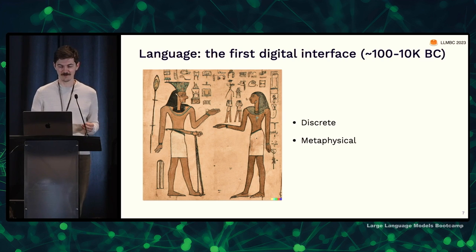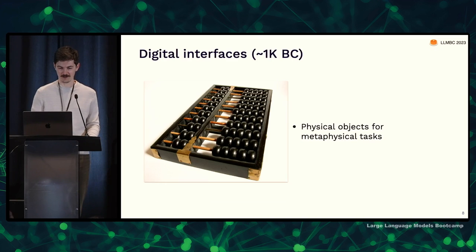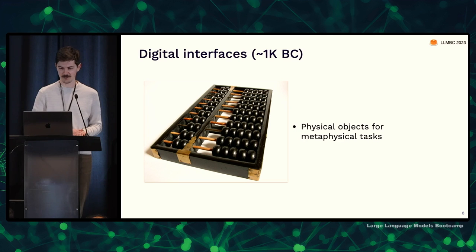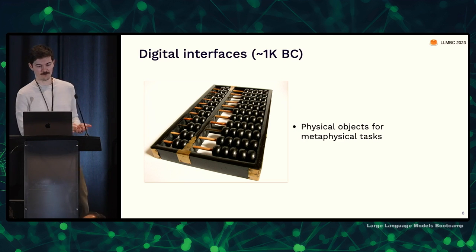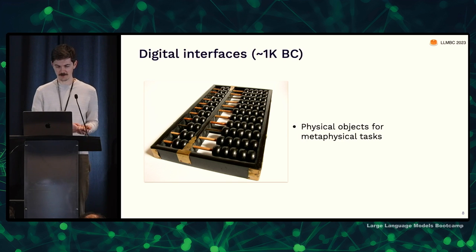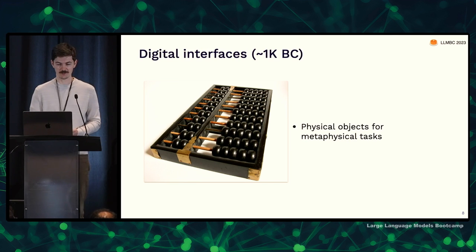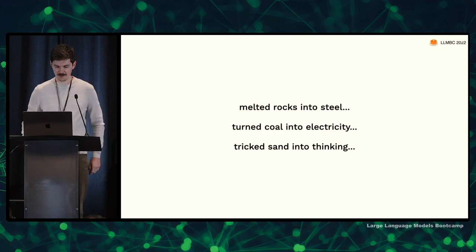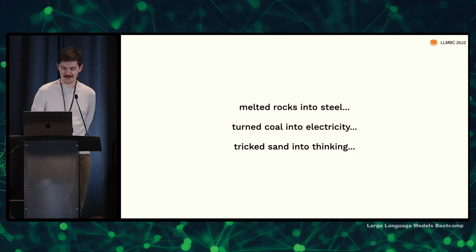Now you can say something really hateful but in a calm, quiet tone that wasn't possible with analog communication. It's quite a change in what interfaces actually mean. Interestingly, we can build physical objects to perform metaphysical tasks. For computation, people started building tools to help them do symbolic computation — so this is an abacus. We figured out how to melt rocks, burn coal, and trick sand into thinking for us.